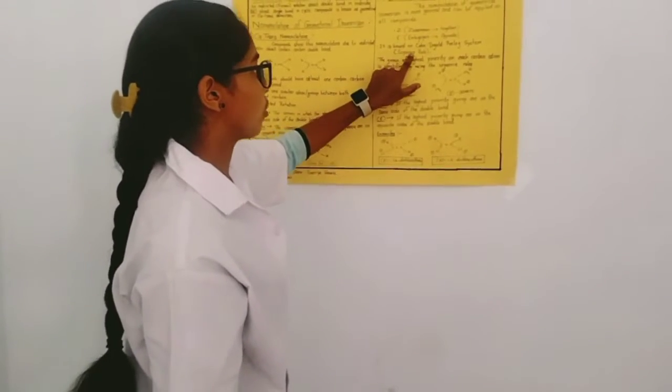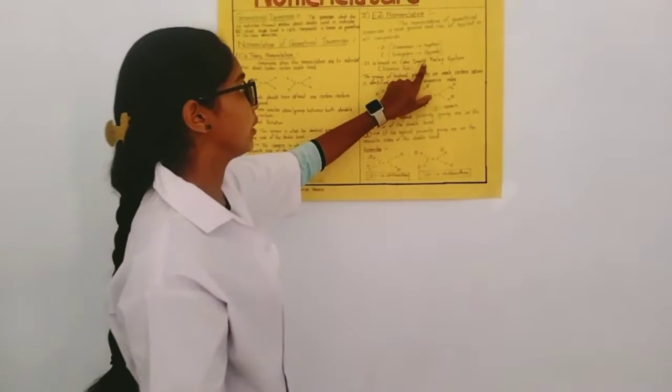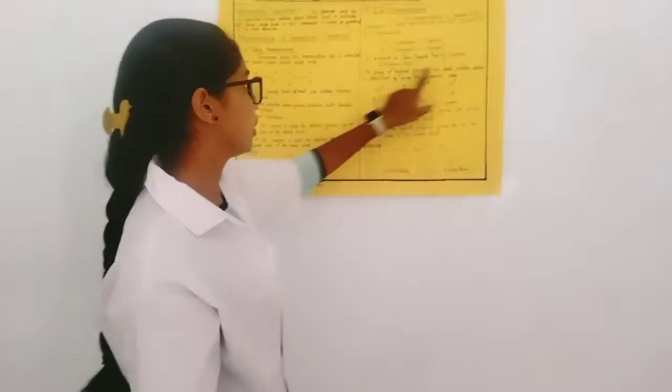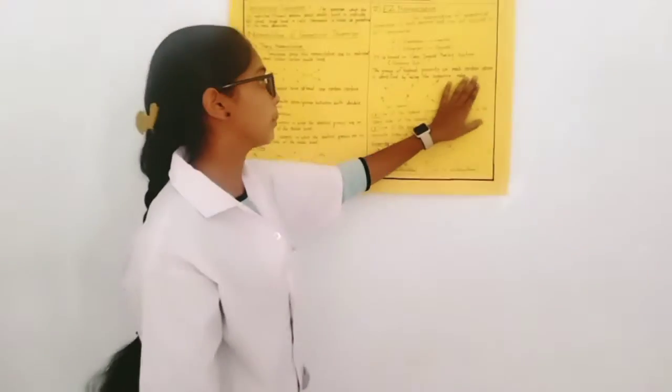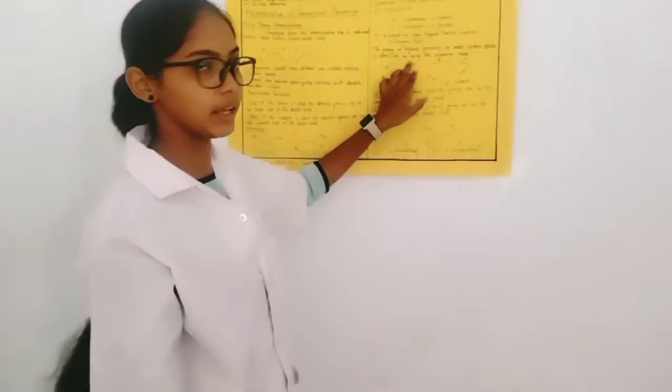It is based on the Cahn-Ingold-Prelog system, means sequence rule, and the group of highest priority on each carbon atom is identified by using the sequence rule.